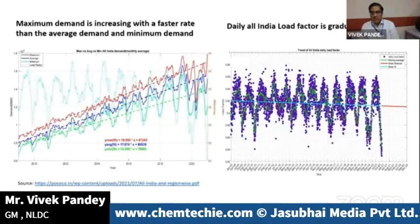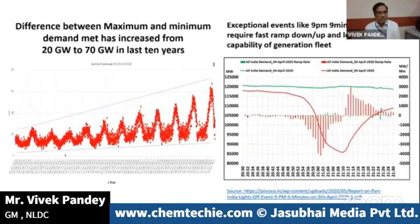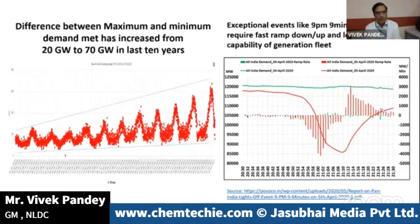The rate of rise of the daily maximum demand is much higher than the minimum demand. This pattern is also evident in the declining daily all-India load factors, meaning there is a decrease in utilization of installed capacity. If you derive the difference between maximum and minimum demand, it was around 20 gigawatts in 2010, which has now increased to around 70 gigawatts. Every day we need to ramp up generation by 70 gigawatts during peak hours.